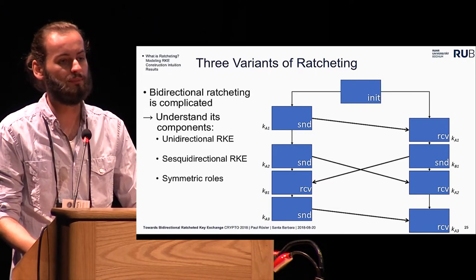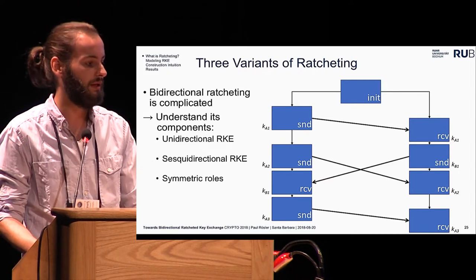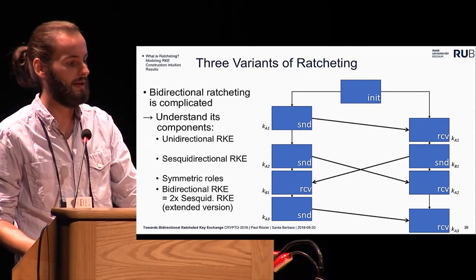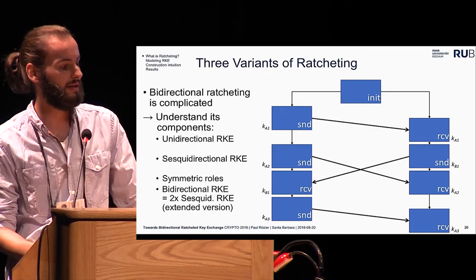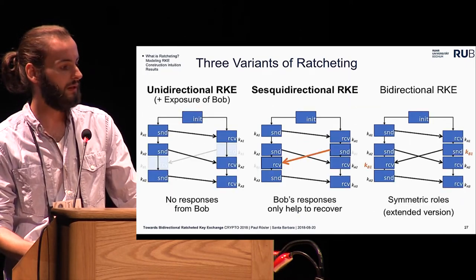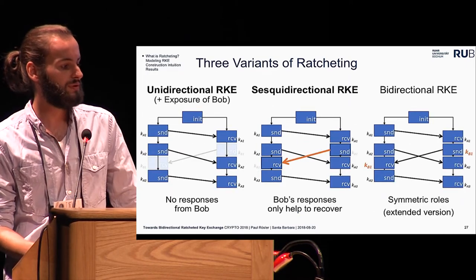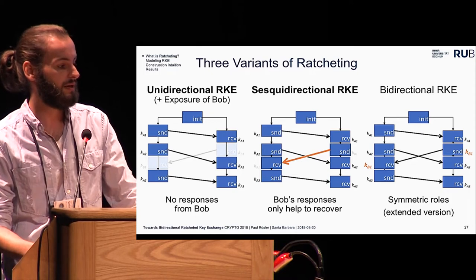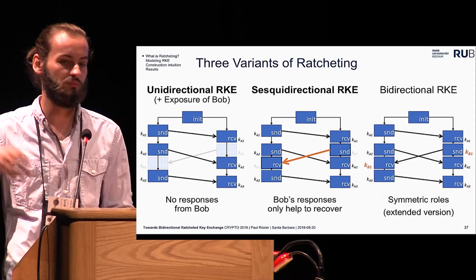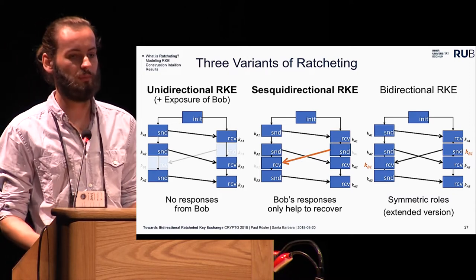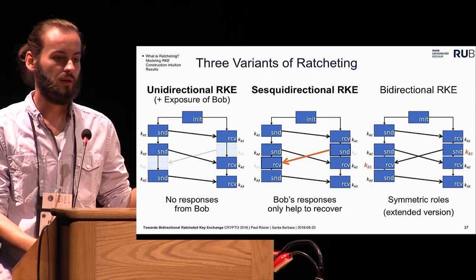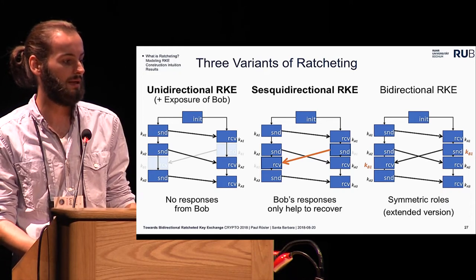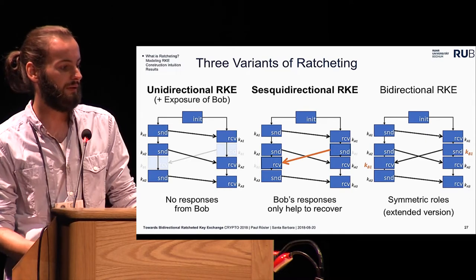Finally, if we allow both Alice and Bob to establish keys, placing them in symmetric roles, we call this bidirectional ratcheting key exchange, which can be generically composed from two instantiations of the sesquidirectional one, as shown in our extended version. Our contributions include models and security notions for unidirectional ratcheting key exchange and sesquidirectional ratcheting key exchange, plus the bidirectional one in our extended version, and provably secure constructions. Compared to prior work, we also allow the adversary to expose the state of Bob, which requires stronger security guarantees from the construction.